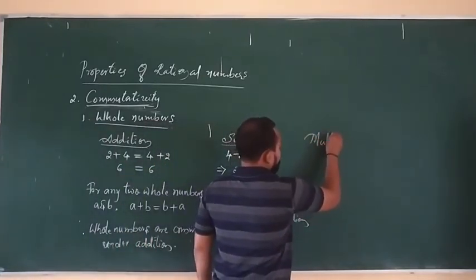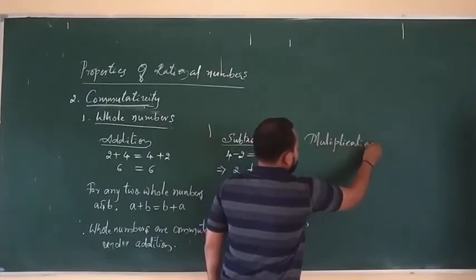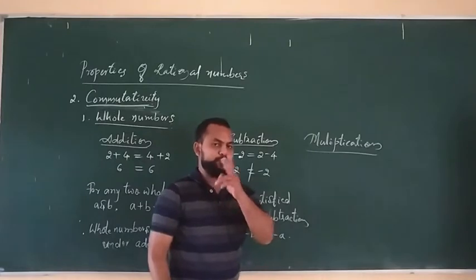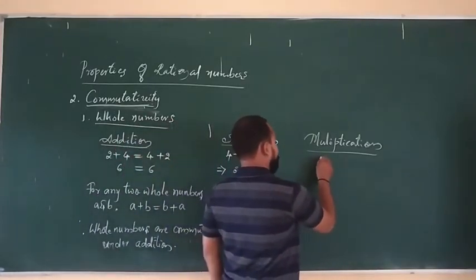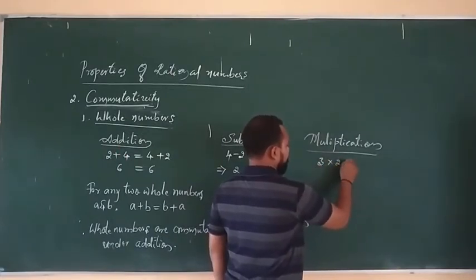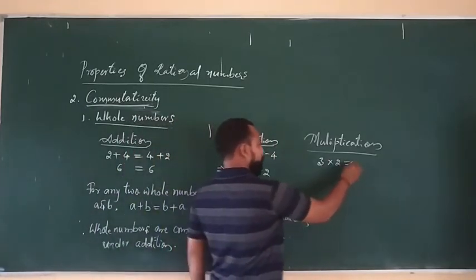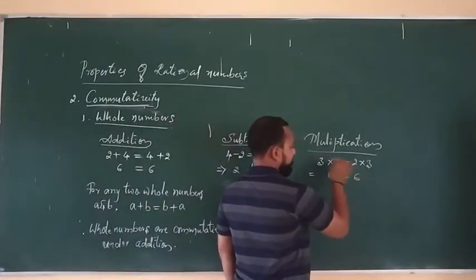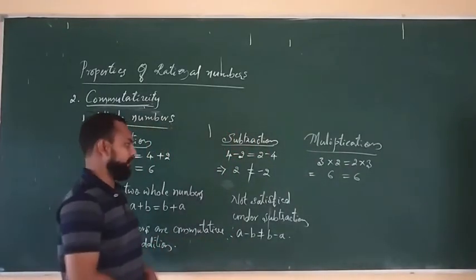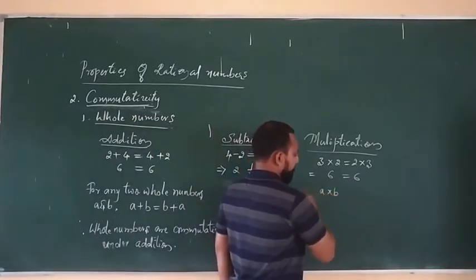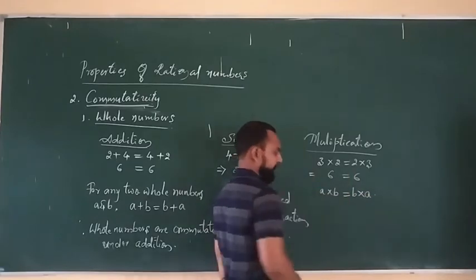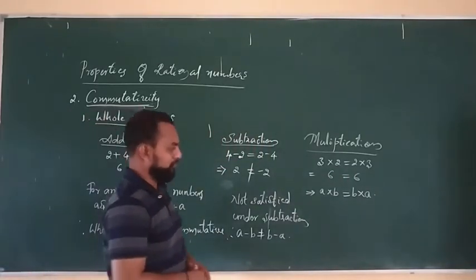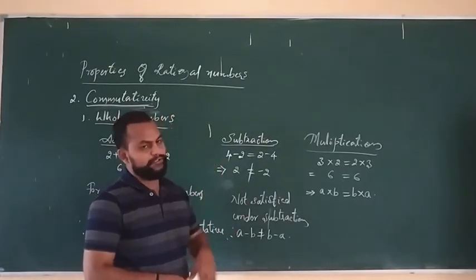The next operation is multiplication. The product of two whole numbers: take 3 into 2 and 2 into 3. Here 3 into 2 equals 6, and 2 into 3 equals 6. LHS equals RHS. Therefore in general, A into B equals B into A. This is the general form of the commutative property under multiplication. For example: 3 into 2 equals 6, 2 into 3 equals 6. Another example: 4 into 3 equals 12, and 3 into 4 equals 12.